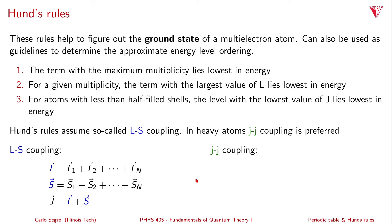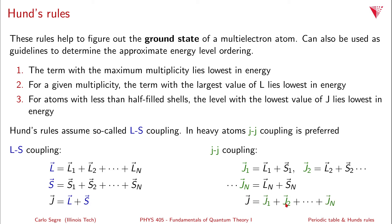In j-j coupling, for each individual electron you add its orbital angular momentum l and spin s to get a total angular momentum j1, j2, up to j_N. You then couple all these individual j values together to get the total j. This gives slightly different values compared to LS coupling because you are combining L and S for individual electrons in different ways.